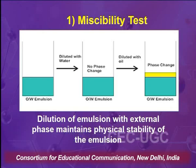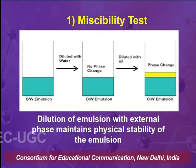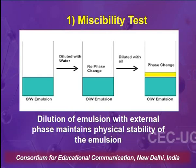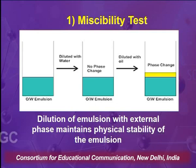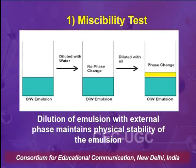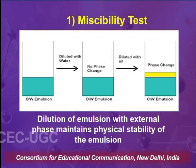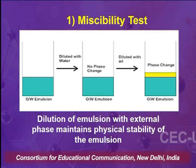The first test is the miscibility test. As the name signifies, when oil or water is added to an emulsion, based on whether the emulsion remains as a one-phase system or the added liquid goes into solution easily, we can identify what type of emulsion it is. The principle is simply that when an emulsion is diluted with the external phase, its physical stability is maintained.